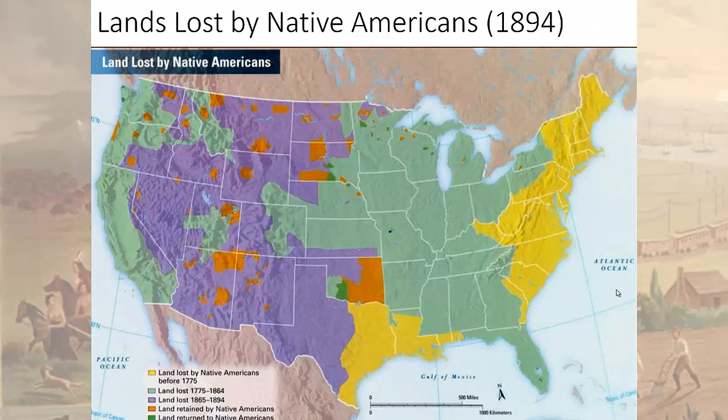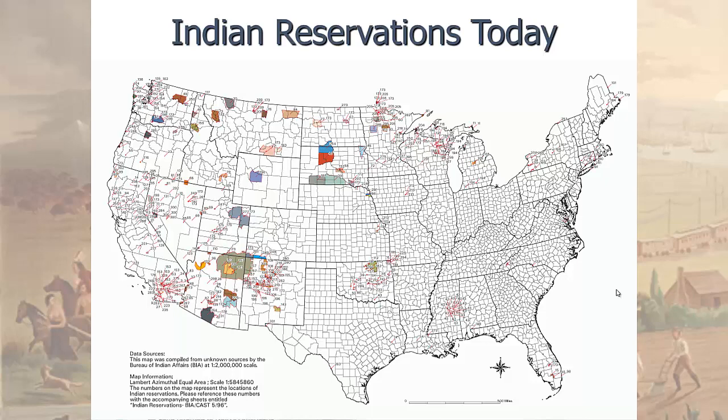By 1894, the land that Native Americans had held before Westerners arrived had shrunk to mainly these main reservations, shown in different colors, that still exist today.